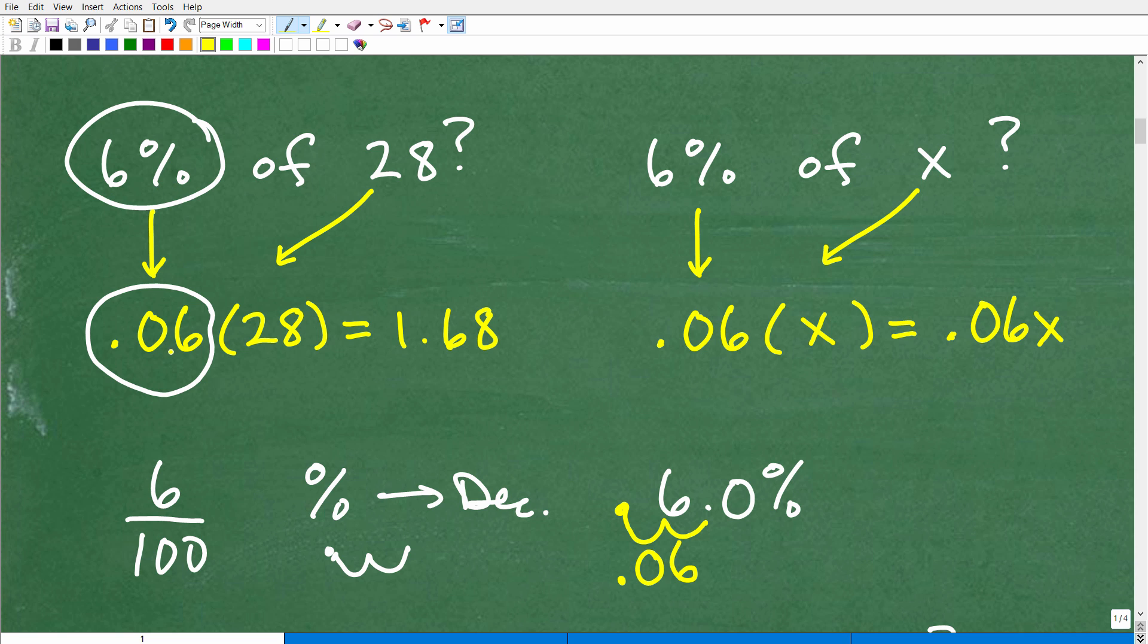So that's the first thing you do. You change your percent to a decimal, and then you're going to go ahead and multiply by that number. So if I'm trying to find 6% of 28, I take that decimal, multiply it by 28. And of course, I can use a calculator, not a problem. And the answer here is 1.68.